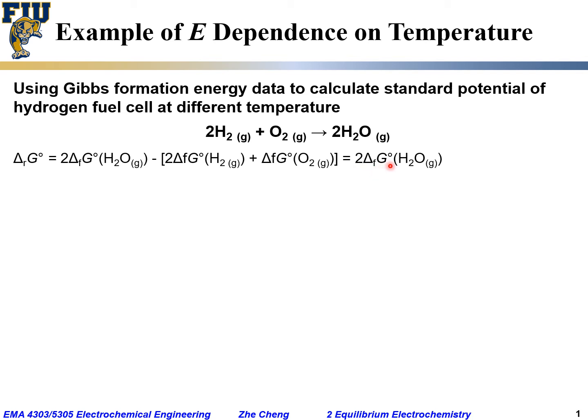As a result, the reaction Gibbs free energy change in the standard state would just be equal to two times the Gibbs formation energy for water in the gaseous state. The standard cell potential E° would be the standard reaction free energy change divided by nF.